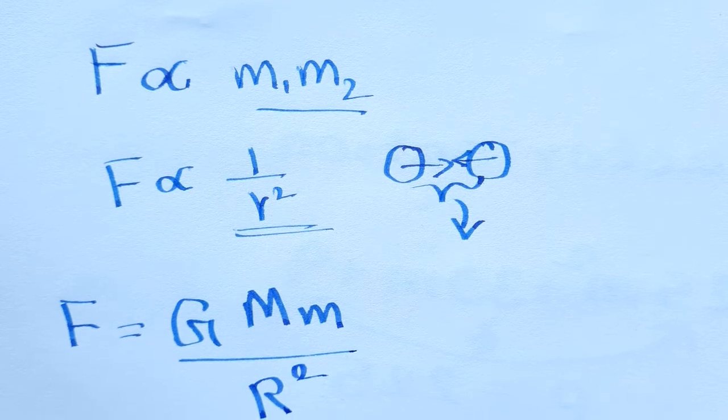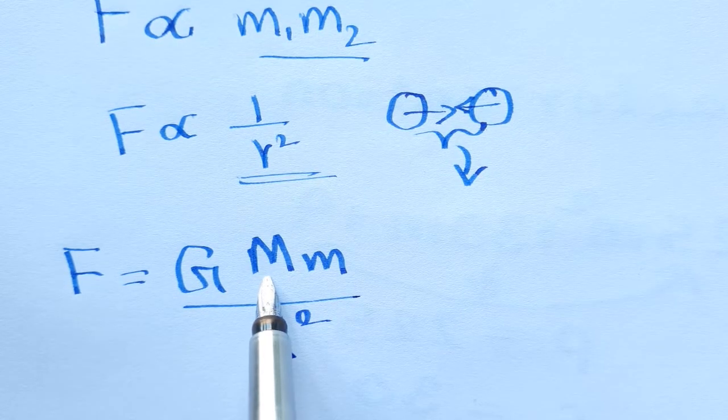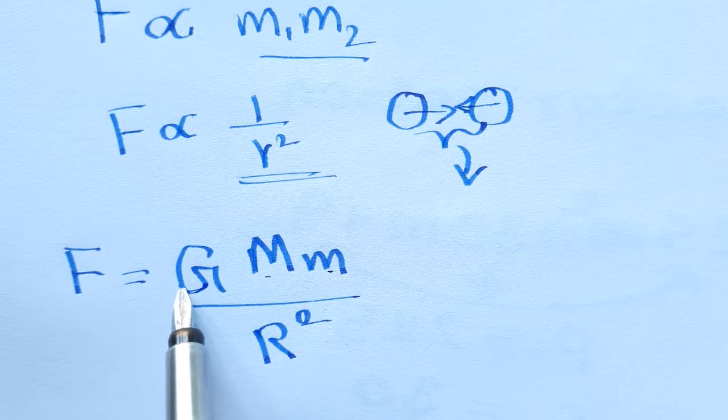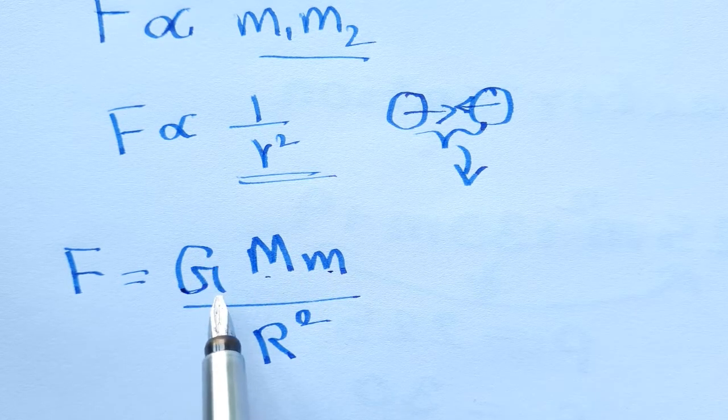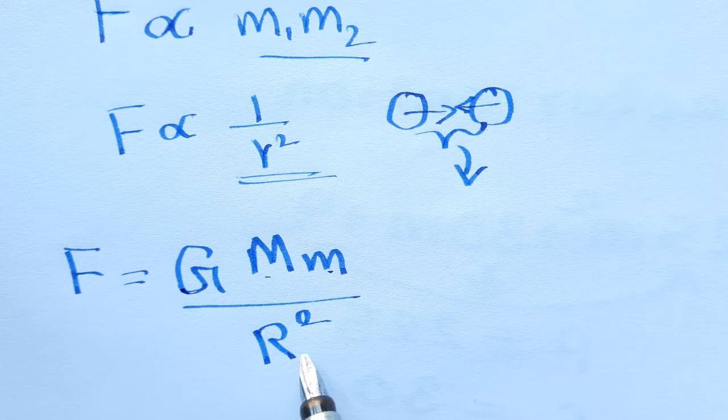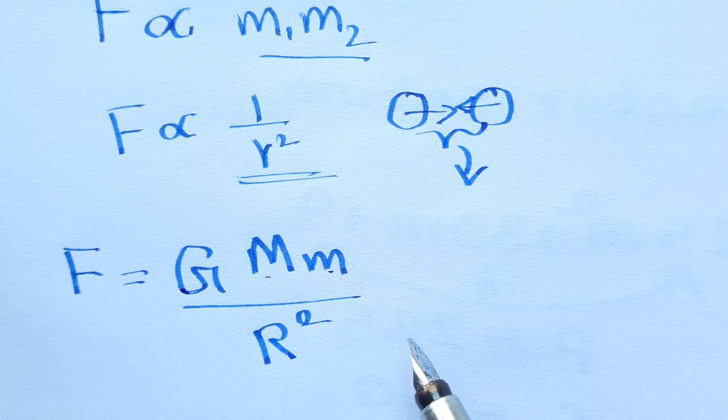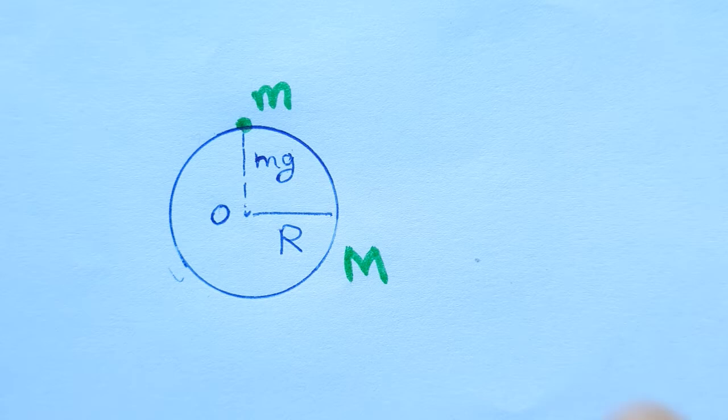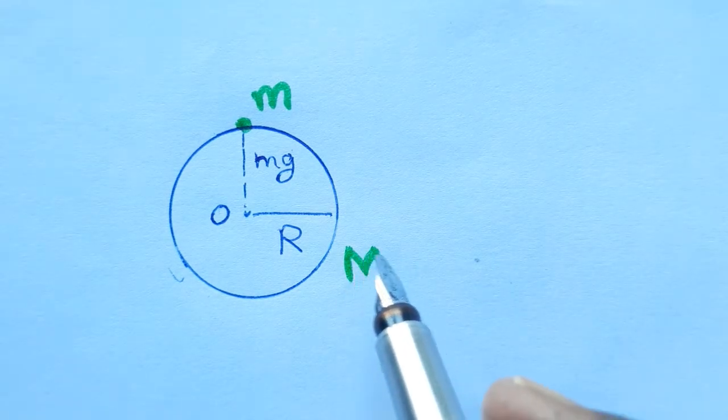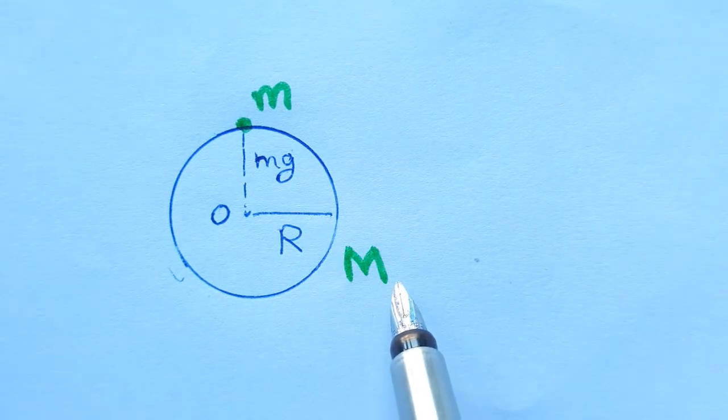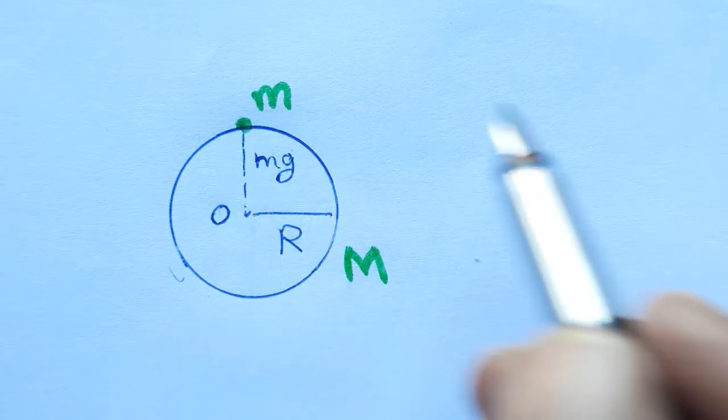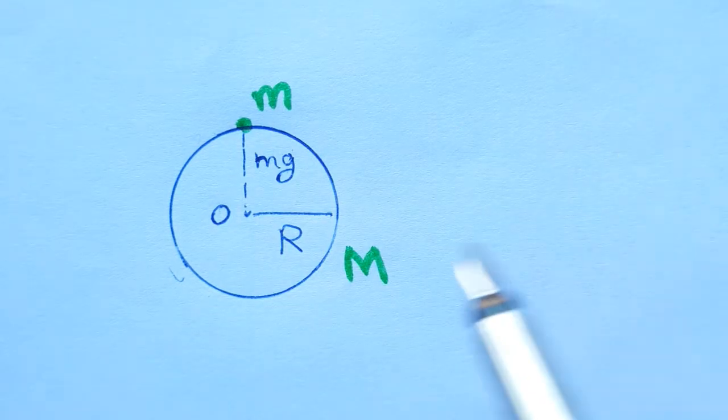This is mass of the Earth, this is mass of the object, this is the universal gravitational constant, this is R, distance squared. Here we take two masses, one is Earth mass capital M, object of a stone or anything, its mass is small m, radius R.